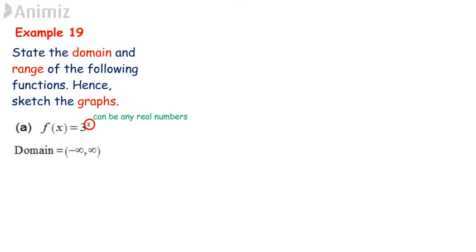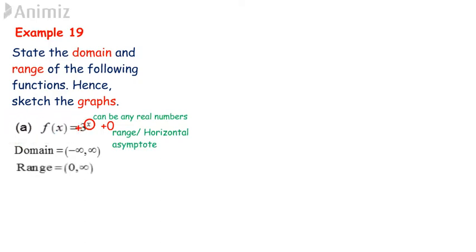We can rewrite this function as 3 to the power of x plus 0. The constant here gives us hints about the range and horizontal asymptote. Since this is a positive y function, the range is from 0 to positive infinity. The horizontal asymptote is y equals 0.